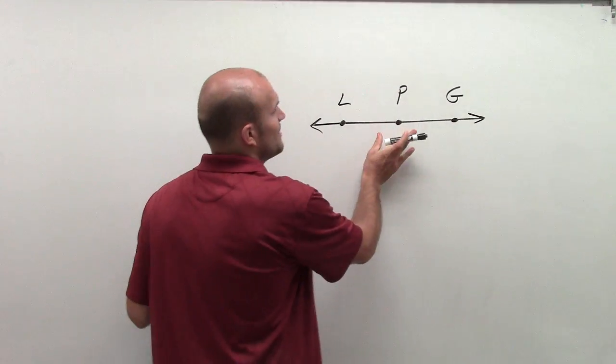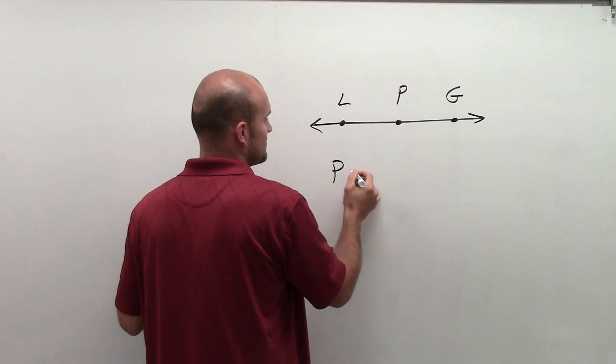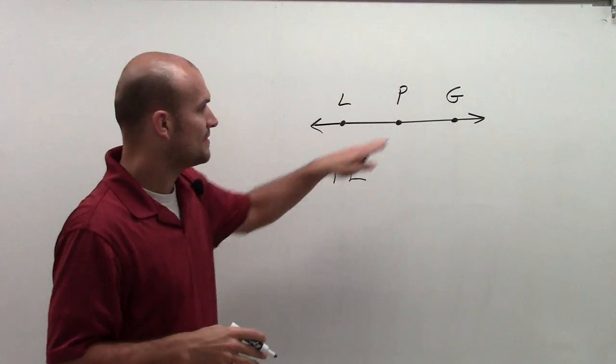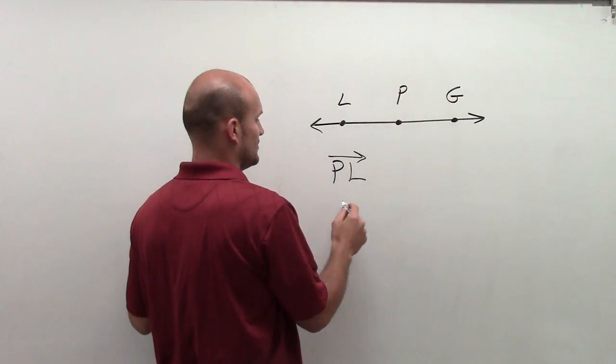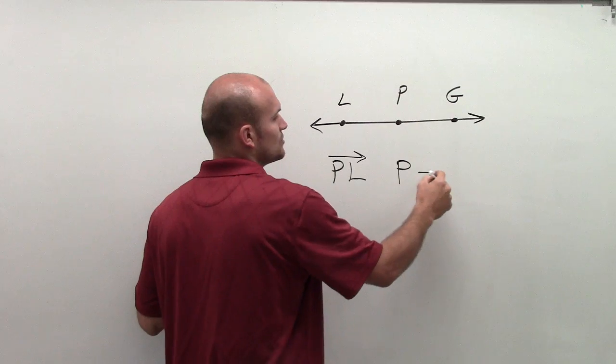So P is going to be my endpoint. And if I have a ray going to the left, I'm going to label it PL. And then the opposite ray would be with the same endpoint, P, but now it's going to go to the right, which would be PG.